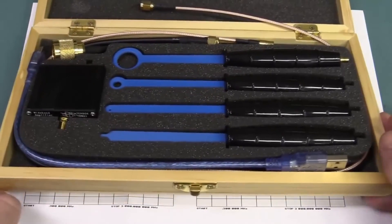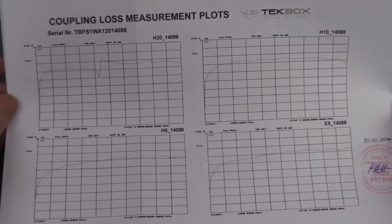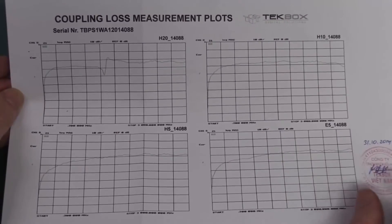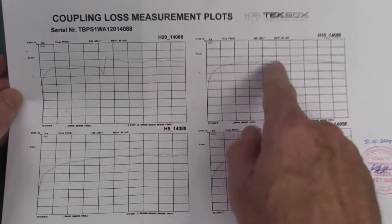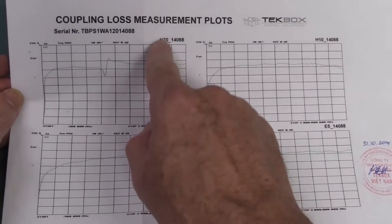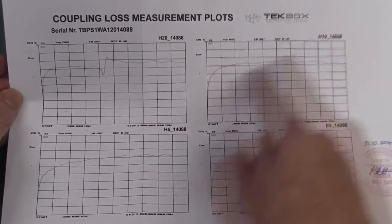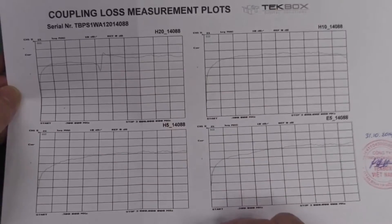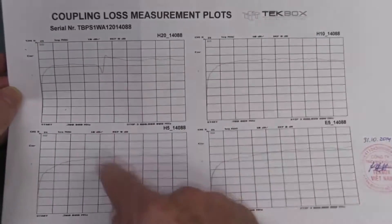And these go for under 400 bucks, and you get a calibration certificate with it as well. These are our four probes—we've got our three H-field probes, so I assume H-20 is like the 20mm diameter, 10 and 5.